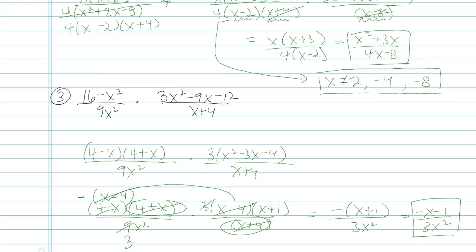Don't forget domain restrictions. Looking at my original denominators up here. I would say x cannot be equal to 0 or negative 4. So please factor everything. That's the key to these. Organize your work and factor everything as you go.